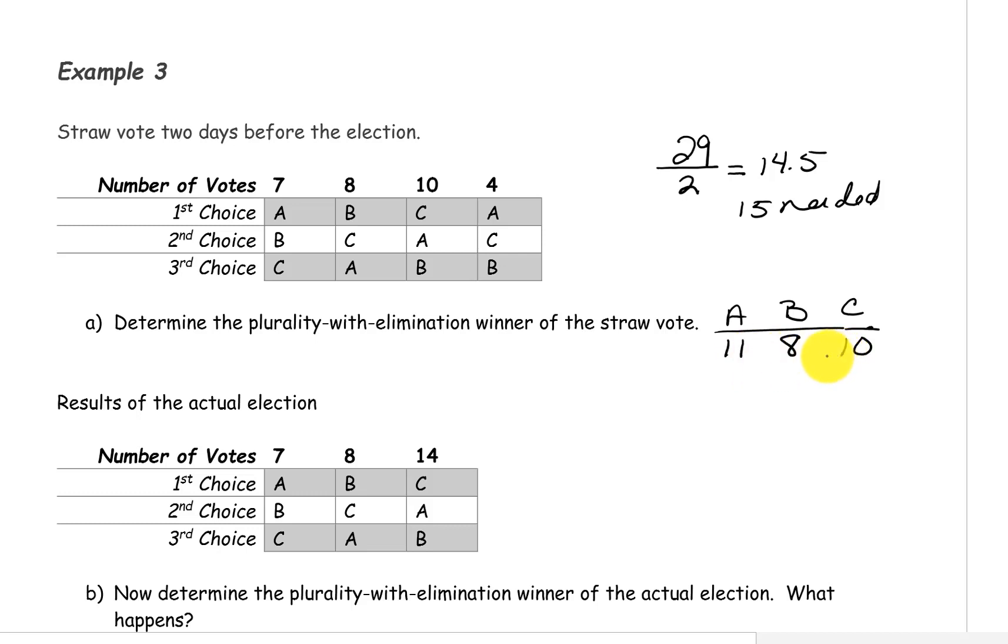None of our candidates have the majority of first place votes. So we eliminate the candidate with the least number of first place votes, which is Candidate B. Candidate B's 8 votes will get passed along to Candidate C. So Candidate A has 11 votes, Candidate B is out of the running, and Candidate C now has 18 first place votes. Candidate C wins.